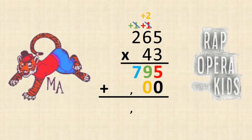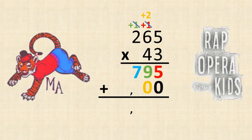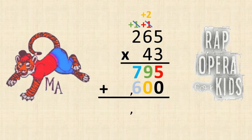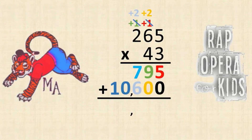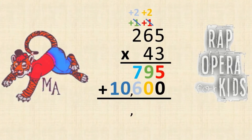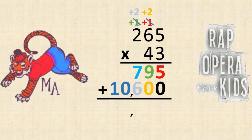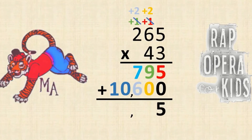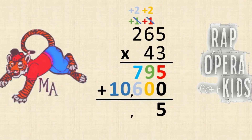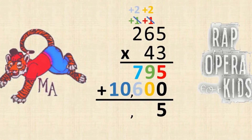Tens to ones, regroup if you need to. Tens to tens, regroup if you need to. Tens to hundreds, regroup if you need to. Keep going till the end, add the zero.